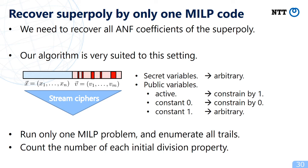The advantage of our new algorithm is that it is superpoly-recovery-friendly. To recover the superpoly, we need to recover all ANF coefficients, and our algorithm can recover the superpoly by solving only one MILP problem. To do this, we first create the initial division property. For secret variables, we set them as arbitrary. For public variables, if a bit is active we constrain it to 1, if it's a constant zero we constrain it to 0, and if it's a constant one we set it as arbitrary. We then run only one MILP problem, enumerate all trails, count the number of each initial division property, and check the parity.